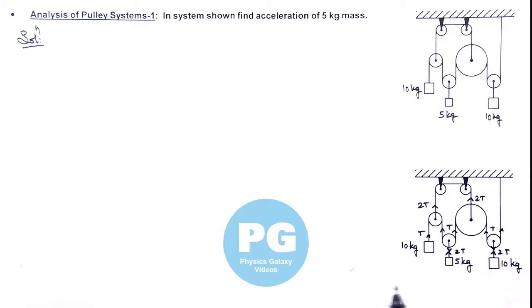First, we consider a random direction of motion for these blocks. For the 10 kg block, we assume it is going down with acceleration a_y1. The 5 kg is going up with acceleration a_y2, and the other 10 kg is going down with a_y3. As we discussed in concept videos, in such cases we can assume any direction of acceleration.